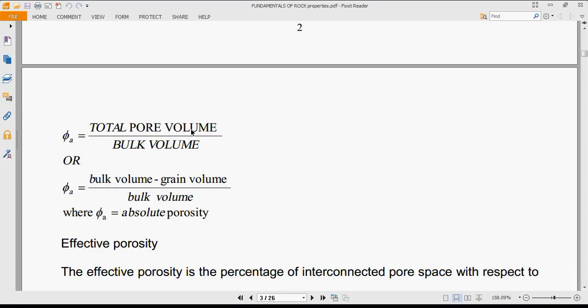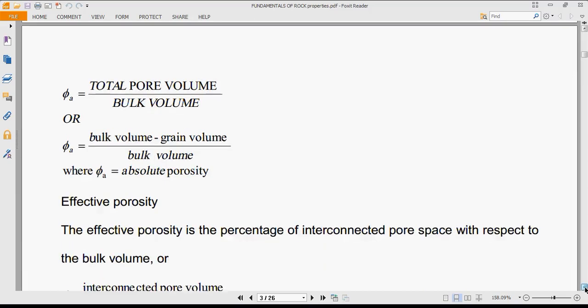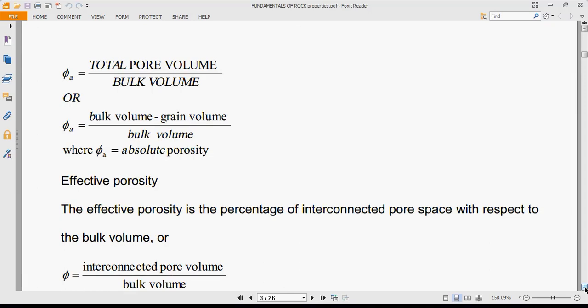φ_A = total pore volume / bulk volume, or φ_A = (bulk volume - grain volume) / bulk volume. The bulk volume minus grain volume equals pore volume, so this is pore volume divided by bulk volume, where φ_A is the absolute porosity.